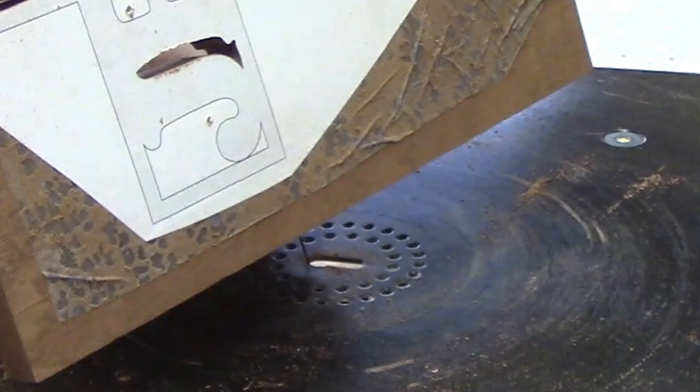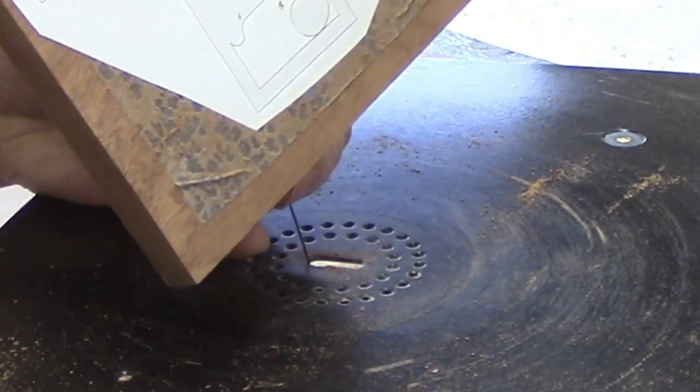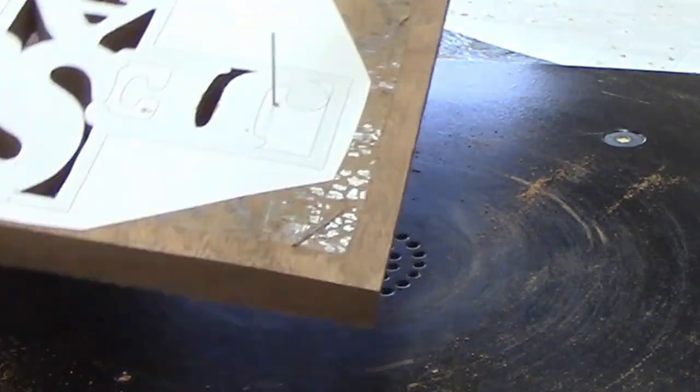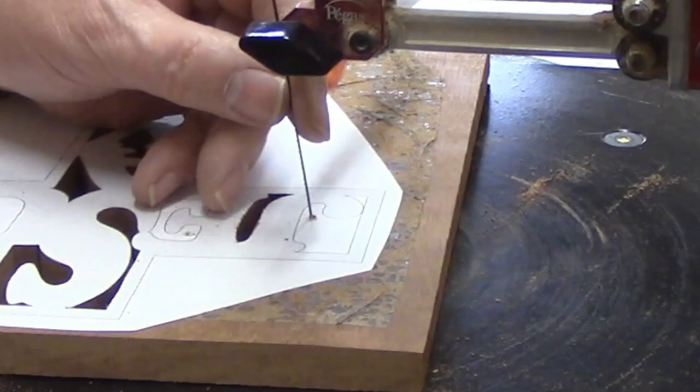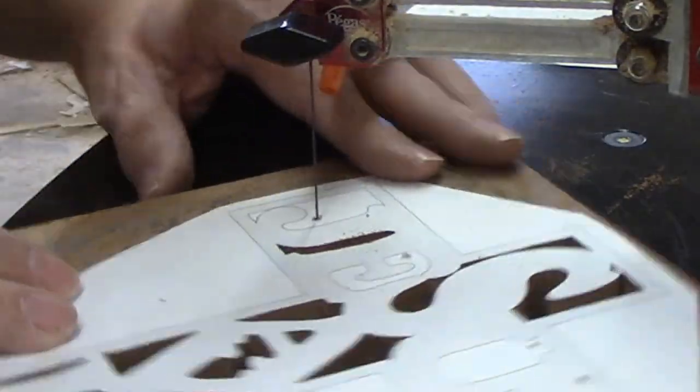As soon as you let up pressure on the foot switch the saw stops. This makes it possible to keep both hands on the work piece at all times and it also makes it possible to stop the saw instantly if you need to.